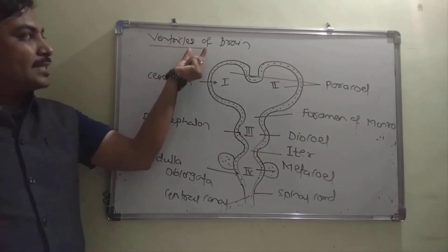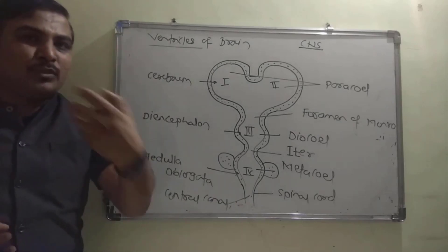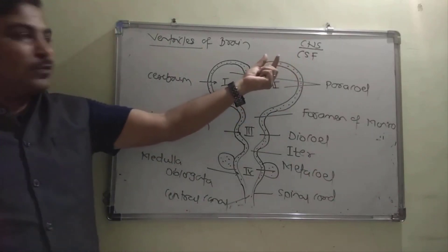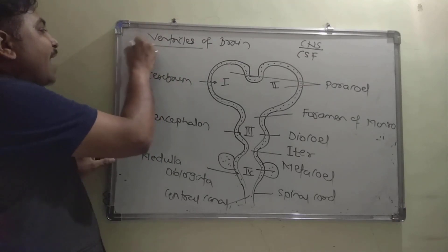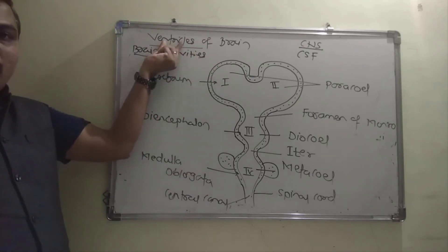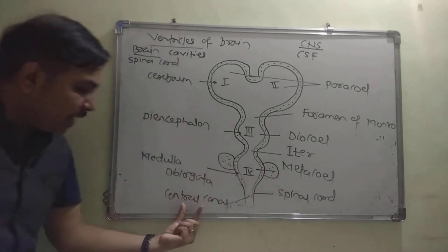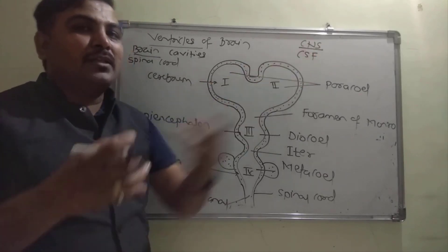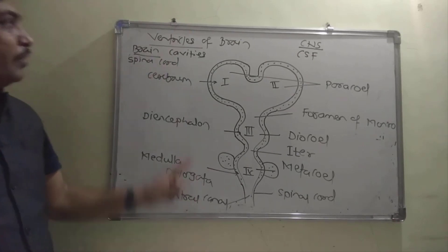Now we look at the ventricles of the brain. Internally, the CNS (central nervous system) is hollow and filled with CSF (cerebrospinal fluid). The cavities in the brain are called ventricles, and the cavity in the spinal cord is called the central canal. There are a total of 4 ventricles in the brain.